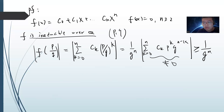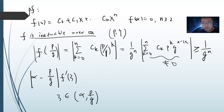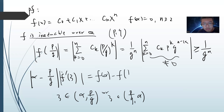Our goal is to bound |α - p/q|. We use the mean value theorem. There exists a point E between α and p/q such that f(α) - f(p/q) = f'(E) × (α - p/q). Since f(α) = 0, we get f(p/q) = f'(E) × (α - p/q), so |α - p/q| = |f(p/q)| / |f'(E)|.